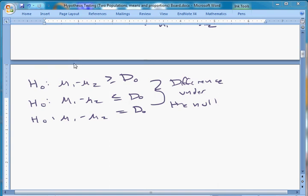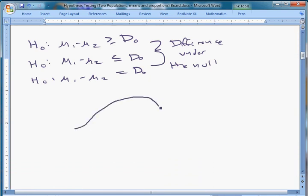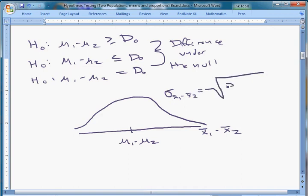All right, so we just finished walking through the basic intuition of doing hypothesis testing with two population means. The basic idea is that if we take a sample difference, X̄₁ minus X̄₂, that sample difference is going to be normally distributed. The mean of the sampling distribution is μ₁ minus μ₂, and the standard deviation is the square root of σ₁² over n₁ plus σ₂² over n₂.